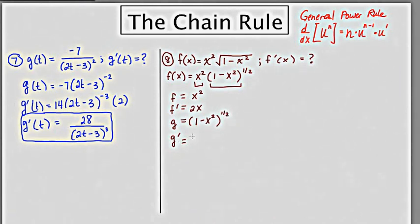So this derivative would be, would require the chain rule and would be 1 half, 1 minus x squared to the negative 1 half times the derivative of the inside, which is negative 2x. So that one thing had a lot of, a lot of stuff going on there.